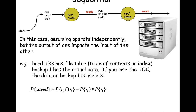We ended with sequential circuits as a way of modeling parts where the output of one component directly impacts the input of another. In our example, the first drive was a table of contents and the second drive was the data disk, where the table of contents gave the location of the file's data. The probability of information saved is the probability that the run event for the hard drive and the run event for the first disk are both true — and since they operate independently, that's the product of the individuals.